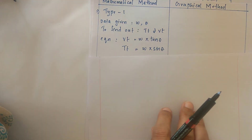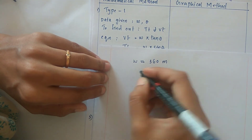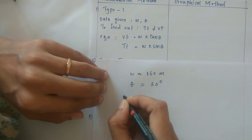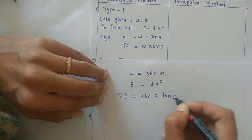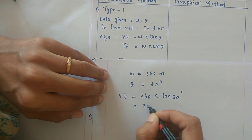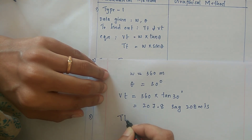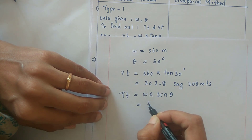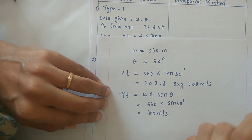Here the values are already given: W is 360 meters and angle of inclination is 30 degrees. Using the mathematical method, vertical thickness VT equals W into tan theta — that is 360 into tan 30 — giving 207.8, approximately 208 meters. For true thickness, TT equals W into sin theta — that is 360 into sin 30 degrees — giving 180 meters. This is the solution using the mathematical method.